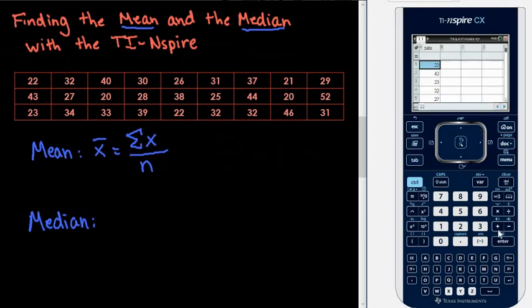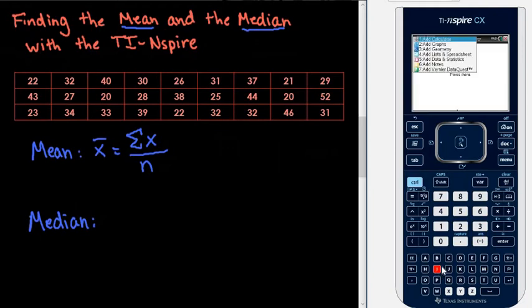I am not going to save what I started. So, in here, what I've already done is I've already entered in the 27 values in this list. I'm going to open a calculator screen. Remember to do that, it's CTRL and I. And I'm going to add a calculator.